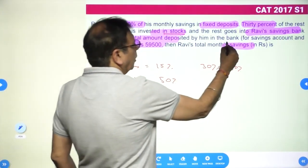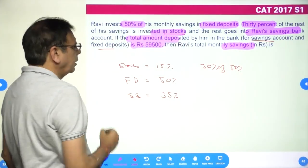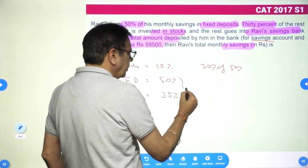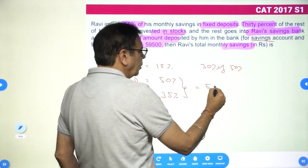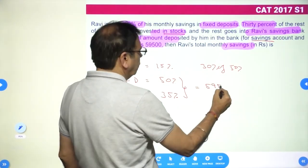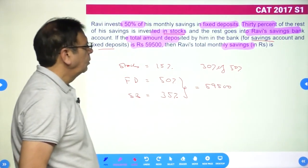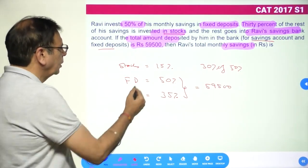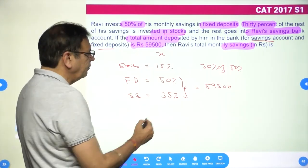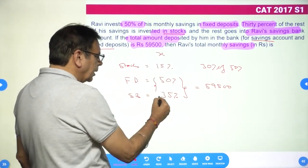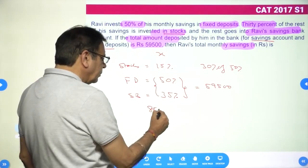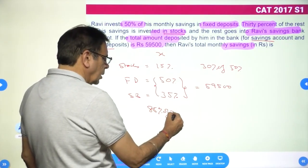If the total amount deposited by him in the bank for savings account and fixed deposit is 59,500, this entire thing equals 59,500. If his savings is X rupees, then this is going to be nothing but 85% of X.